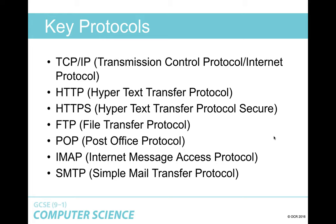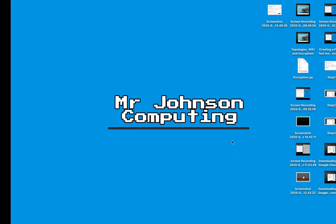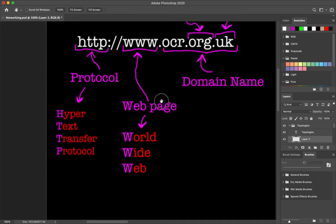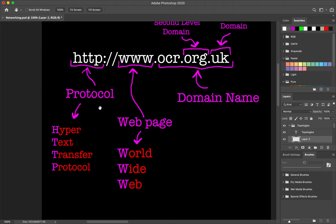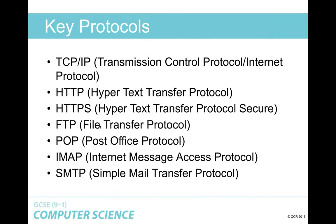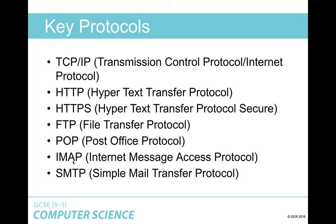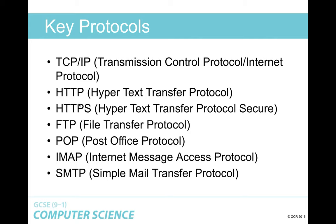These are the key protocols: TCP/IP — Transmission Control Protocol over Internet Protocol. HTTP — Hypertext Transfer Protocol. HTTPS — Hypertext Transfer Protocol Secure. FTP — File Transfer Protocol. Then three protocols related to email: POP — Post Office Protocol; IMAP — Internet Message Access Protocol; and SMTP — Simple Mail Transfer Protocol. That's seven protocols in total. HTTP and HTTPS we already know, and FTP is straightforward. The biggest challenge will be learning the differences between the three email protocols.